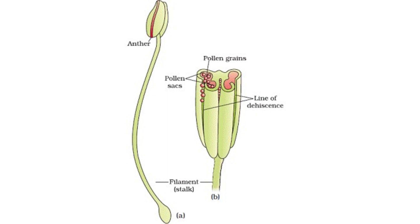Two: pollen grains — tiny particles carrying male gametes, or sperm cells. Three: pollinators — animals such as bees and butterflies, or wind, that help transfer pollen.